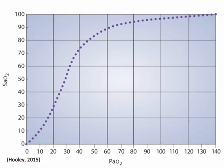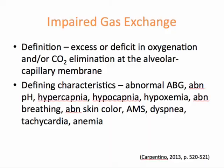The SaO2 is from an arterial blood gas sample, whereas the SpO2 is an estimate obtained from a pulse oximeter, so the SpO2 may not reflect the precise SaO2. The nursing diagnosis for impaired diffusion is impaired gas exchange, defined as an excess or deficit in oxygenation and/or carbon dioxide elimination at the alveolar capillary membrane. Defining characteristics include an abnormal ABG with abnormal pH, hypercapnia or high CO2, hypocapnia or low CO2, or hypoxemia (low oxygen in the blood), as well as abnormal breathing pattern, abnormal skin color, altered mental status, dyspnea, tachycardia, and anemia.